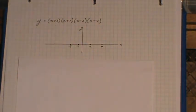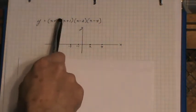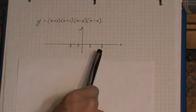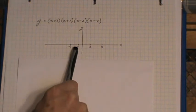Now, when I'm drawing these, the first thing I do is look for the zeros. When it's in factored form, it's very easy to see the x values that make y equal to 0. I've got these marked on the x-axis.